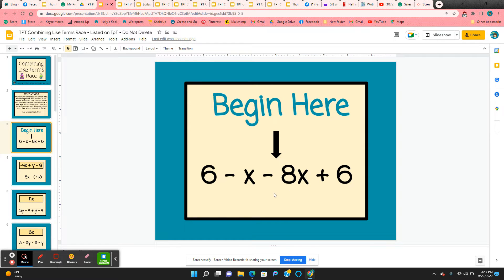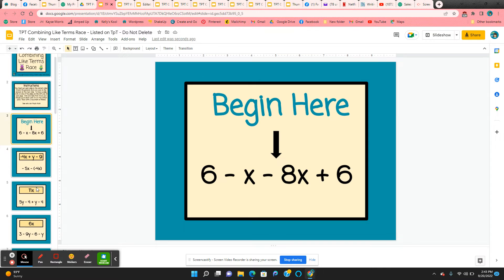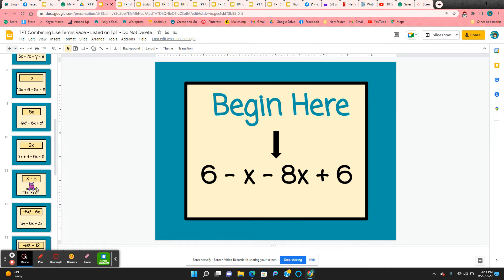Once they've combined like terms, on this one they would have negative 9x plus 12. They have to scroll up and down. The answer is going to be in one of these darker yellow boxes. So negative 9x plus 12. Scroll up and down until you find it.